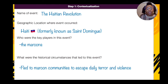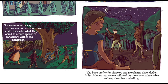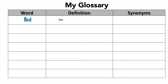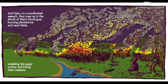So we have the Haitian Revolution as the name of the event. The geographic location where the event occurred is Haiti, formerly known as Saint-Domingue. Who were the key players? The Maroons. And what were the historical circumstances that led to this event? They fled to maroon communities to escape daily terror and violence.